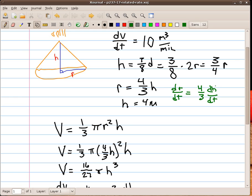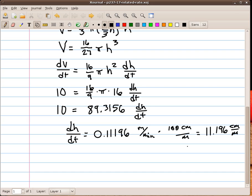So, I can go down to the bottom and answer part b by multiplying 11.196 by 4 thirds. And that turns out to be 14.928 centimeters per minute.